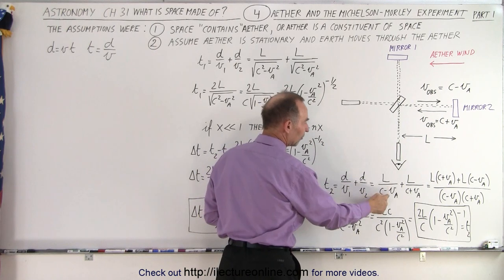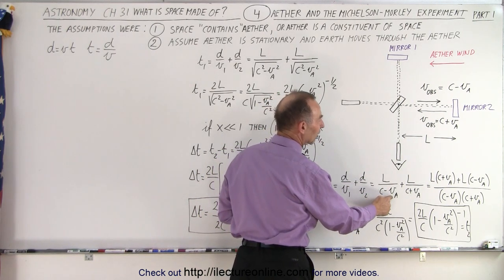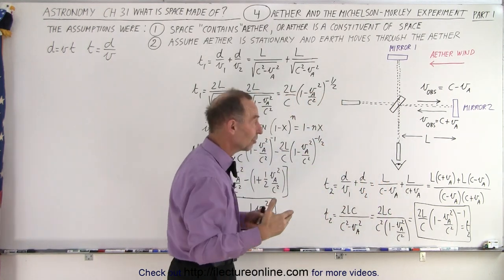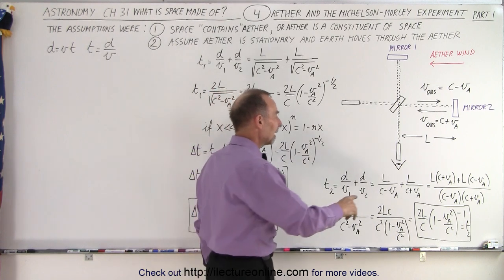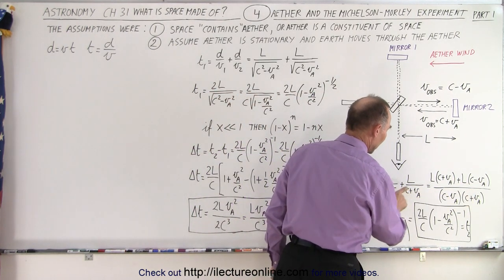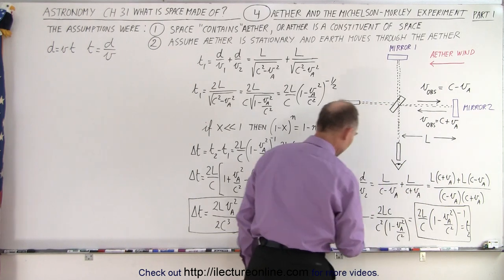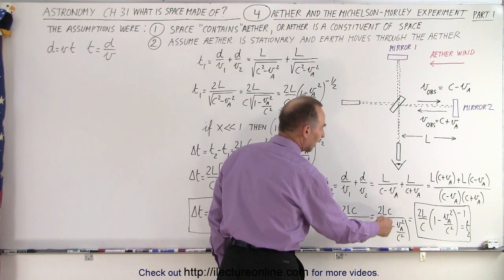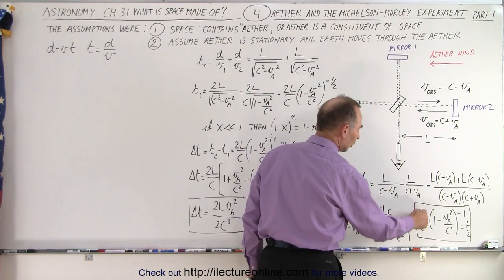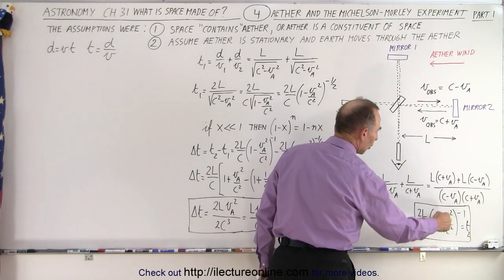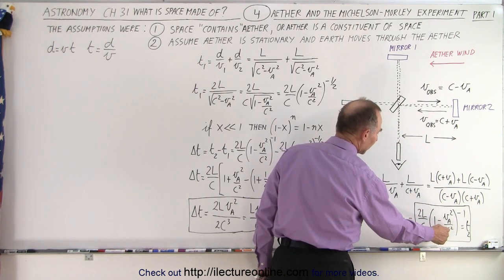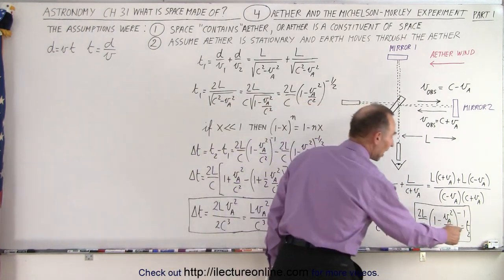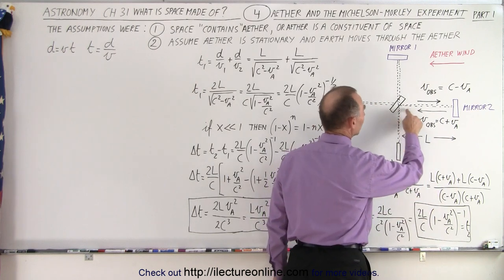Going from here to there it's C minus V_A, so L divided by C minus V_A. And then coming back it's the distance divided by C plus V_A, because now it's the sum of the two velocities. If we algebraically solve for this, we get the common denominator, multiply through, factor out C squared, and after cancellation we end up with two L over C times one minus V_A squared over C squared, all to the negative one power. That is then the time T2.